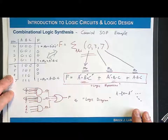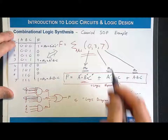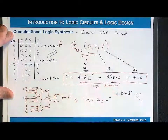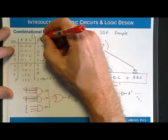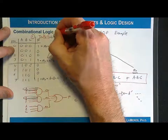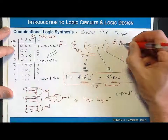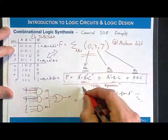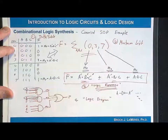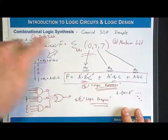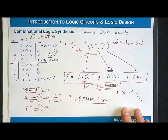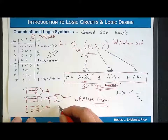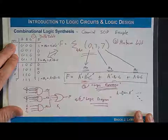This is an example of how we can go back and forth between all these equivalent descriptions of functionality. We now have four unique ways to describe a combinational logic circuit: the truth table, the minterm list, the logic expression, and the logic diagram. All four are equally valid and equivalent. The logic diagram is closest to the form you would actually implement before manipulating it to minimize logic.